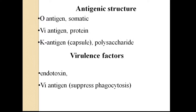Fermentative properties used for Francisella identification include: positive hydrogen sulfide test; negative indole test; and fermentation of glucose, mannose, and maltose with acid formation. Francisella has O-antigen (somatic lipopolysaccharide), V-antigen (protein), and K-antigen (encapsulated polysaccharide). Virulence factors include endotoxin, since it is gram-negative, and V-antigen, which suppresses and inhibits phagocytosis.